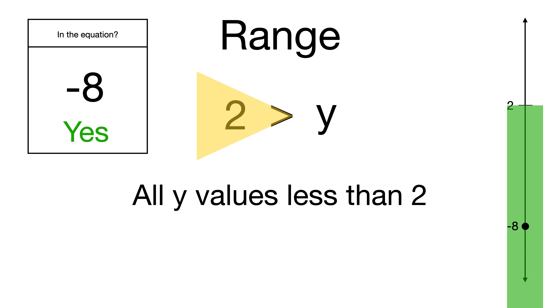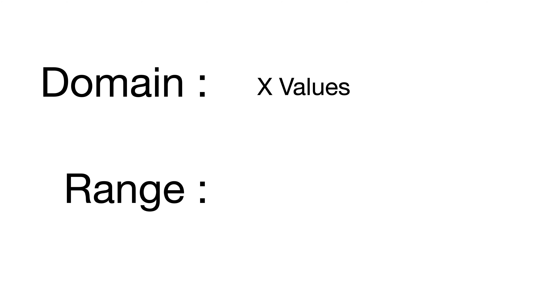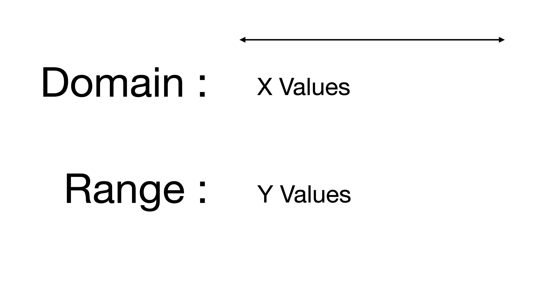Before you go, just remember the difference: domain is going to be all x values, on the x axis going from left to right. Range is going to be y values, on the y axis which goes vertical, up and down. That is the full overview of domain and range. There will be one more video about graphing with domain and range.